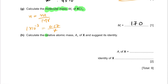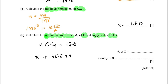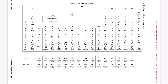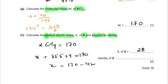The last part asks us to calculate the relative atomic mass of X and suggest its identity. The MR of XCl₄ is 170. The atomic mass of Cl is 35.5, so 35.5 × 4 = 142. Therefore X = 170 − 142 = 28. The relative atomic mass of X is 28, which corresponds to silicon — a group 14 element with atomic mass 28.